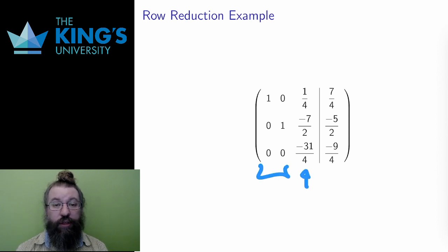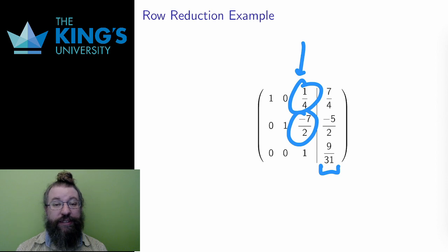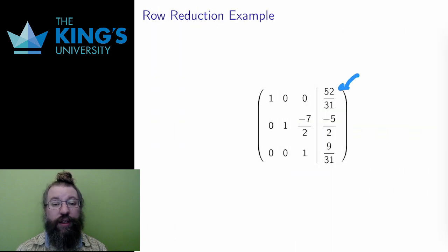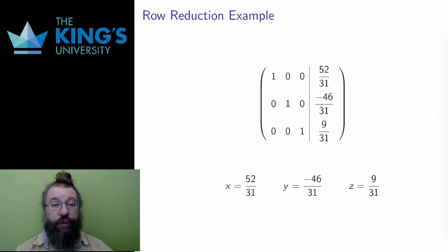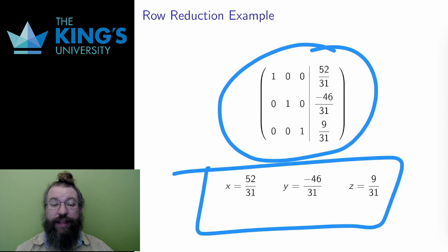Now the first two columns are finished. I need a leading one in the third row — the arithmetic is getting a bit tedious, but that does happen. I divide the last row by negative thirty-one over four to get a one at the start. Negative nine over four divided by negative thirty-one over four produces nine over thirty-one. Then I clear the entries above this leading one: I subtract one-quarter times the third row from the first row, and I add seven-halves times the last row to the second row. Now I have reached the reduced row echelon form. The solution is: x equals fifty-one over thirty-one, y equals negative forty-six over thirty-one, and z equals nine over thirty-one.